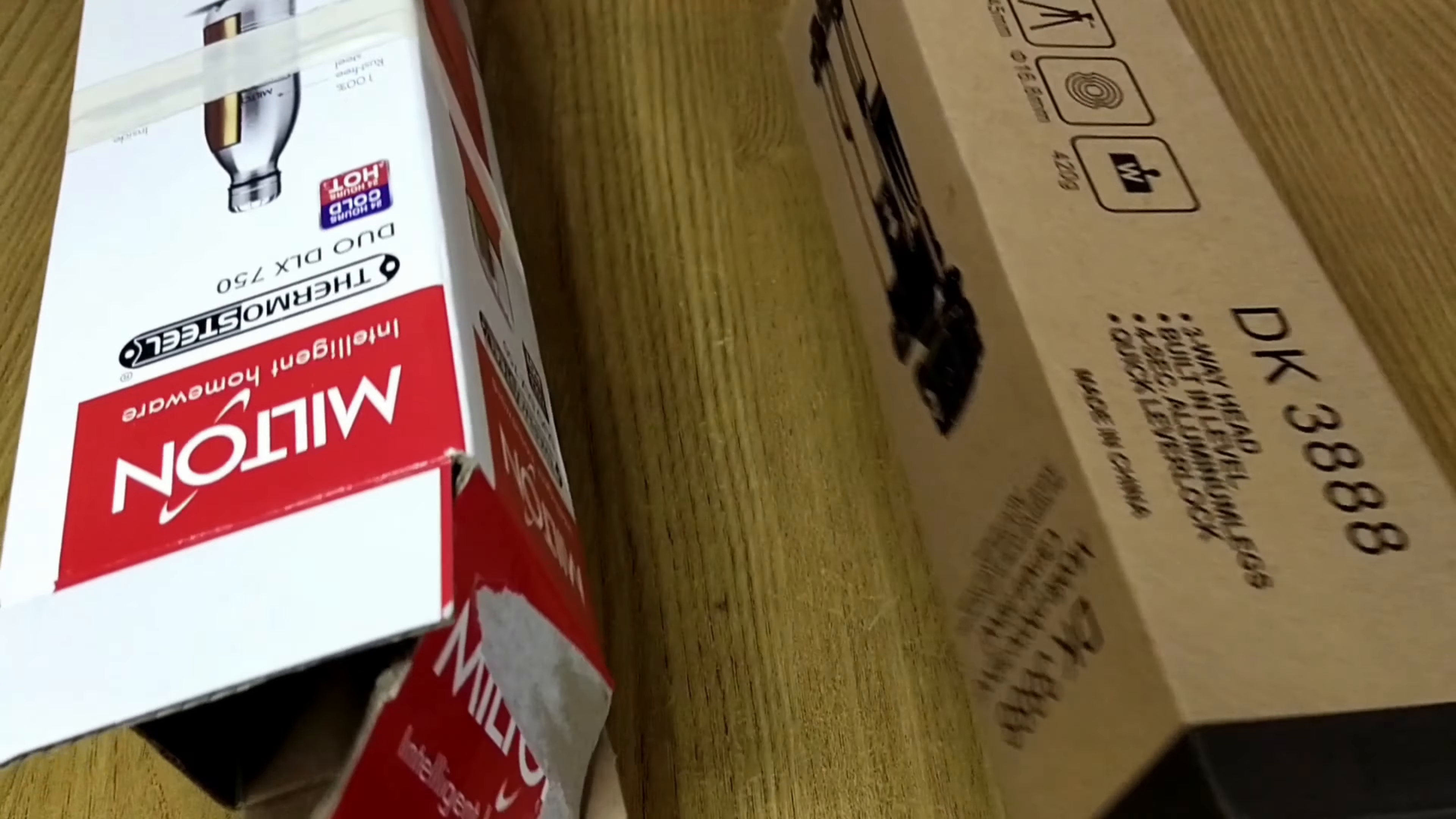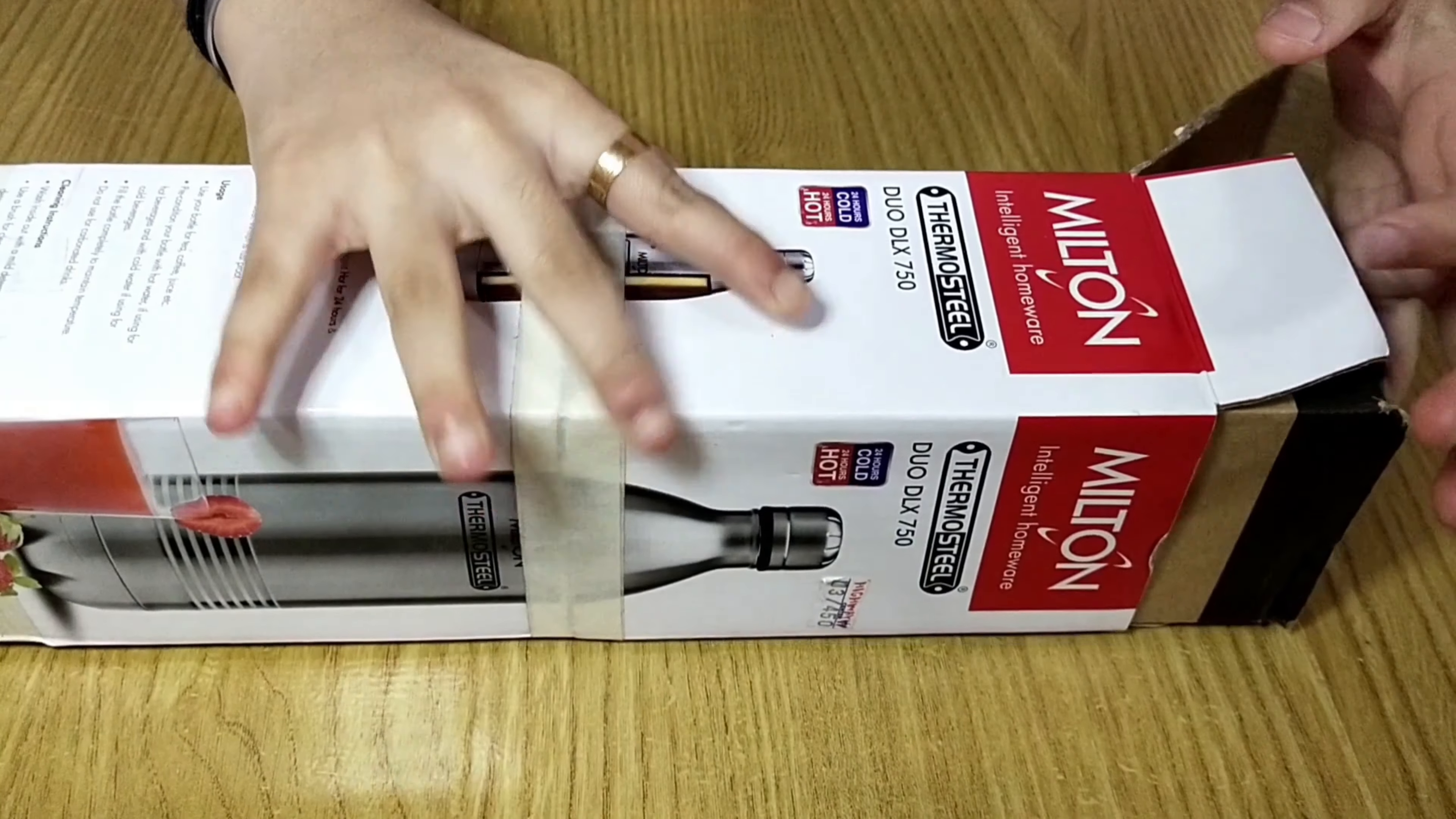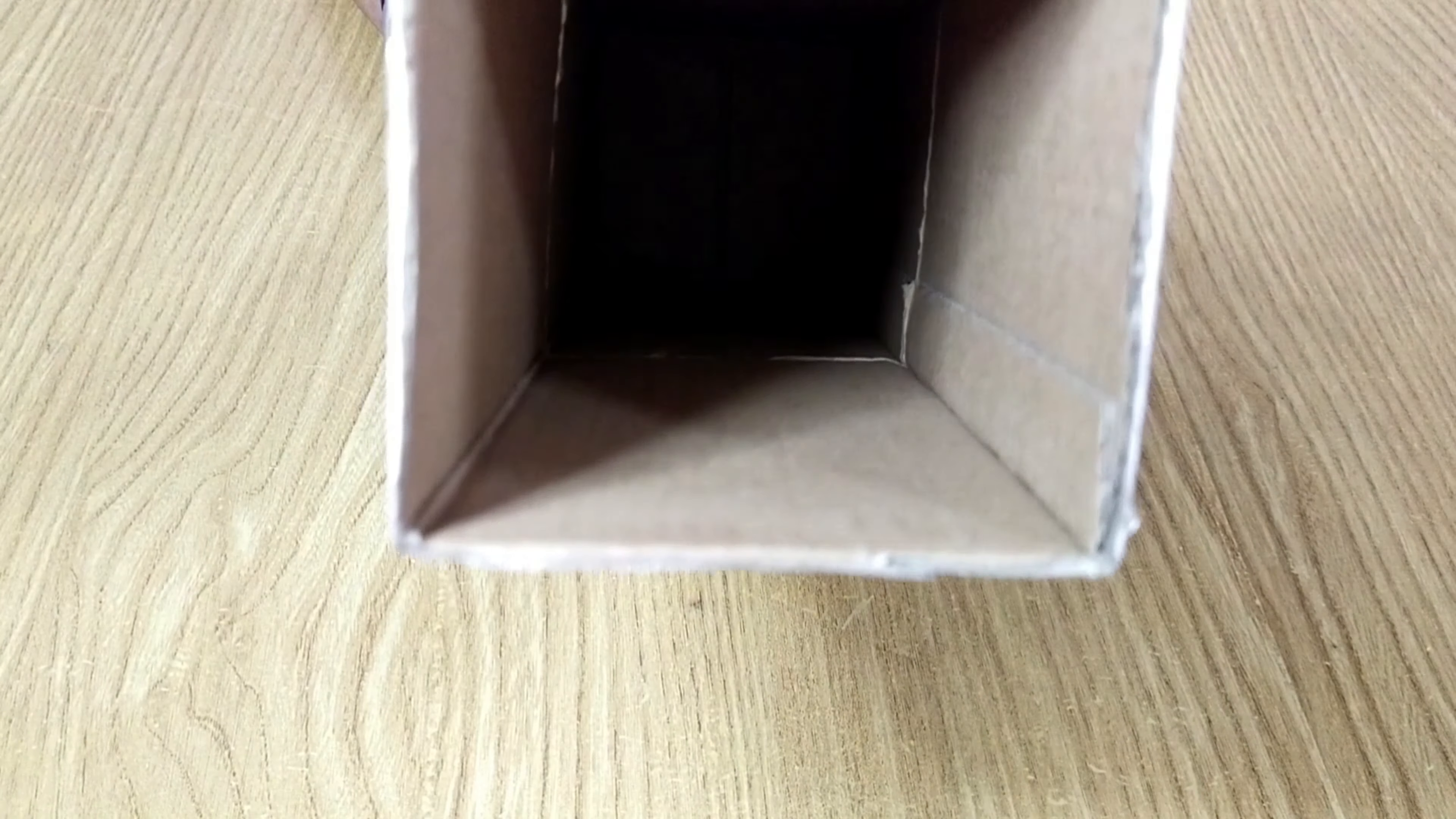First take the big box and cut the flaps on one side of the box. The box should be completely dark inside. If not, cover the box with black paper.